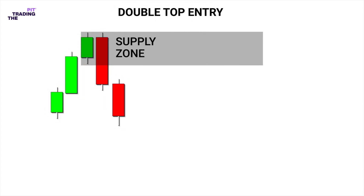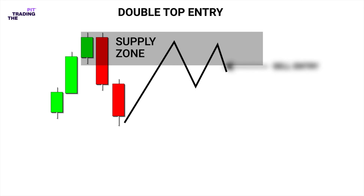Here is our supply zone. We wait for the price to retrace and form a double top before we place our sell entry. A double top pattern is a chart pattern where price forms two consecutive tops.